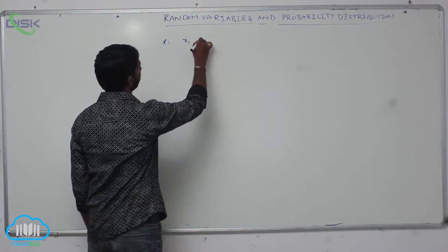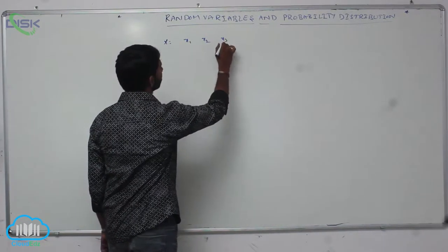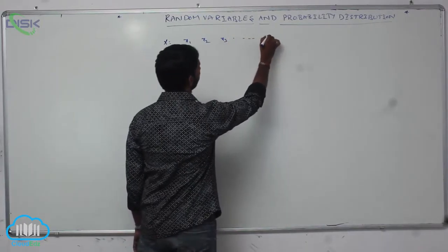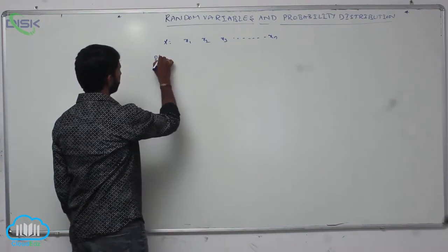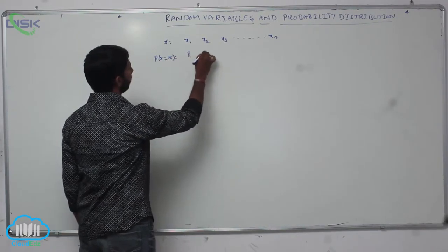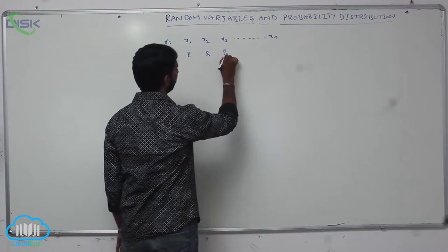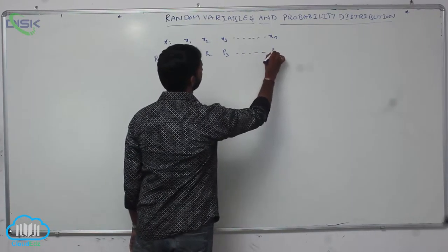Capital X corresponding events are X1, X2, X3 and so on Xn, and the corresponding probabilities, that is P of X equals Xi, are P1, P2, P3 and so on Pn.